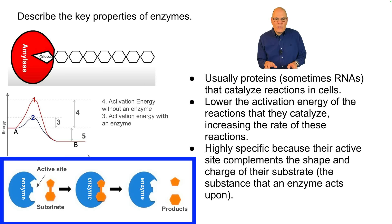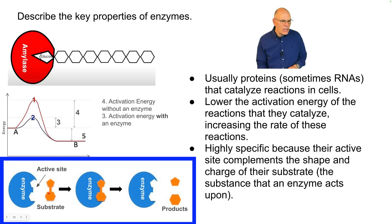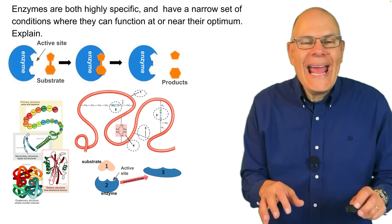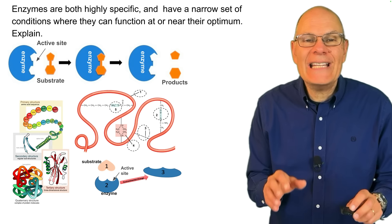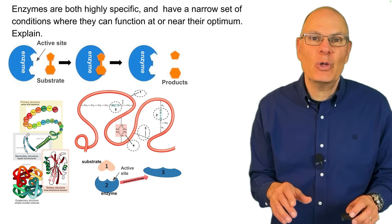Enzymes are highly specific because their active site complements the shape and charge of their substrate, which is the substance that an enzyme acts upon. Here's an active site, here's the substrate, and this is the enzyme as a whole — a large protein. Here's the enzyme interacting with the substrate, and here we have the products. Enzymes are both highly specific and have a narrow set of conditions where they can function at or near their optimum.